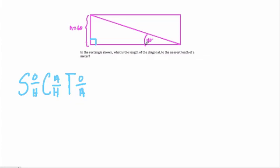Here, since we're given the angle of 40 degrees, and we're given the opposite side, and we want to find the diagonal or the hypotenuse, I'm going to use the sine function right here, where sine is opposite over hypotenuse.